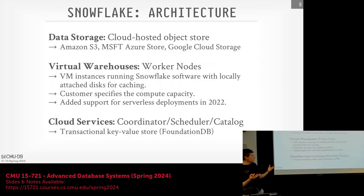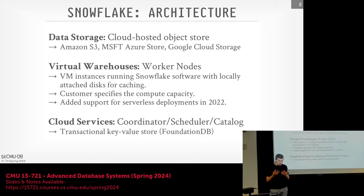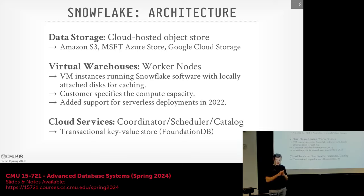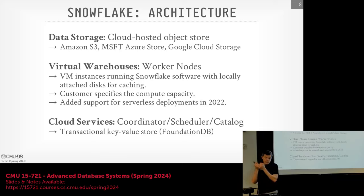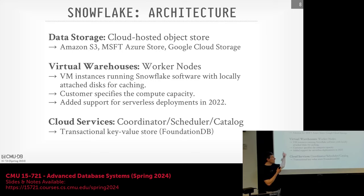Looking at the architecture: they run on disaggregated storage using an object store. The paper discusses how they decided early on whether to build their own storage layer or just use S3 and let Amazon handle it. From an engineering effort standpoint — you can only do so many things when starting a new system — they chose to focus on the execution engine and leverage worker-side caching, letting Amazon handle replication and storage durability. That turned out to be a smart choice; they originally only supported S3 but now support all major cloud vendors.